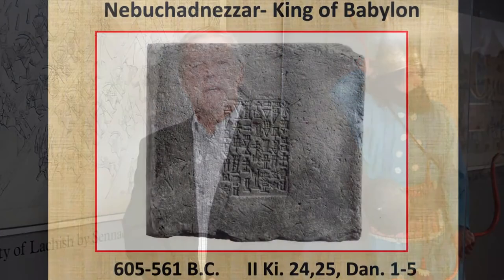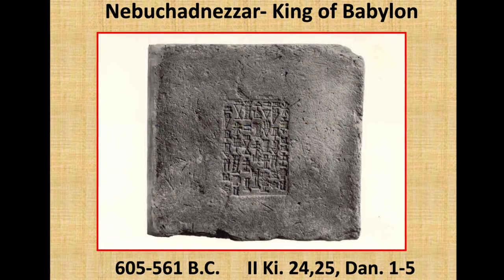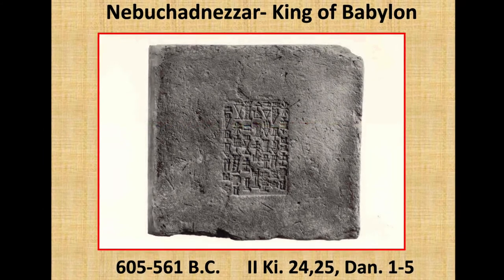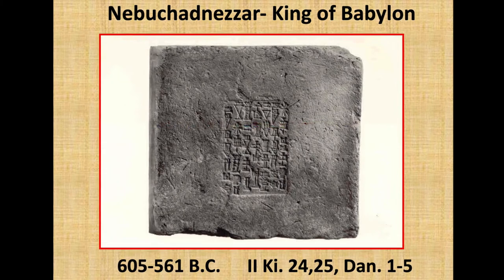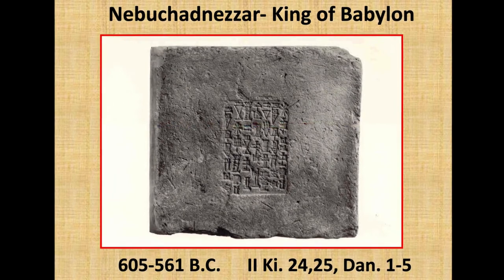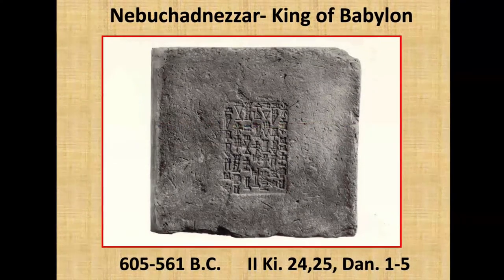From the ruins of the city of Babylon, some of the bricks have the actual name of Nebuchadnezzar, who was king of Babylon from 605 to 561 BC. You can read about this in 2 Kings 24 and 25, and also Daniel chapter 1. It's amazing to see so many of these biblical kings and their relationships with the kings of Babylon confirmed through archaeology.